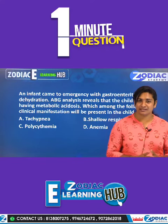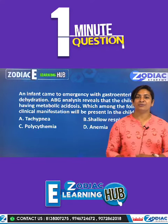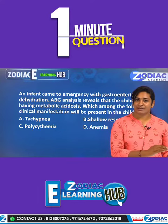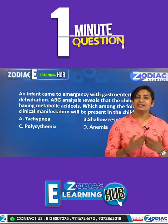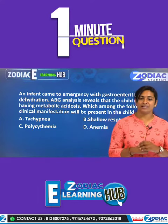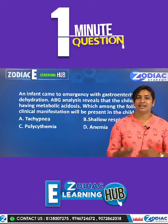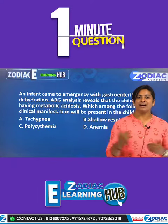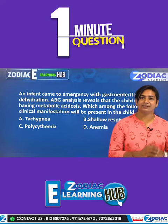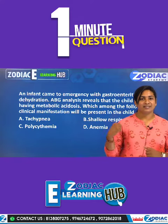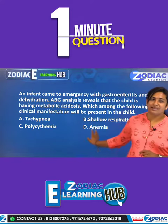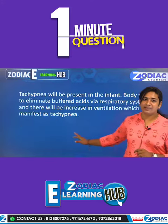The child has gastroenteritis and dehydration. The right answer is tachypnea. What is tachypnea? It is rapid breathing — the body's compensatory response to metabolic acidosis detected on ABG analysis.